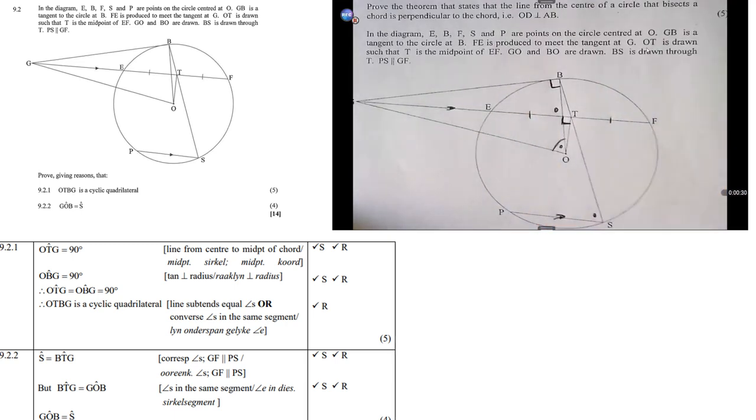GO and BO are drawn. Now, BS is drawn through T. And, of course, PS and GF are parallel. Now, the first question is, prove that OTBG is a cyclic quadrilateral.